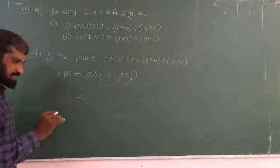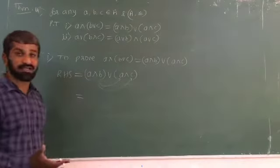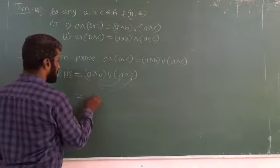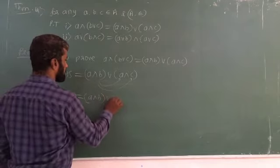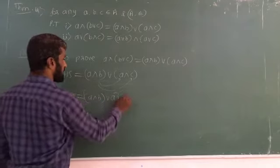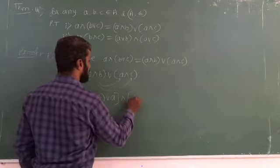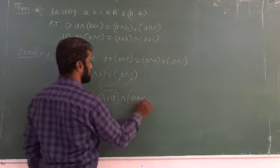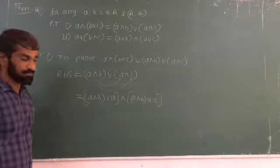LHS and RHS — LHS is difficult to do directly. The RHS is easier to start from. So we take A meet B, bracket join A, bracket meet operation. This gives us A meet B, join C.